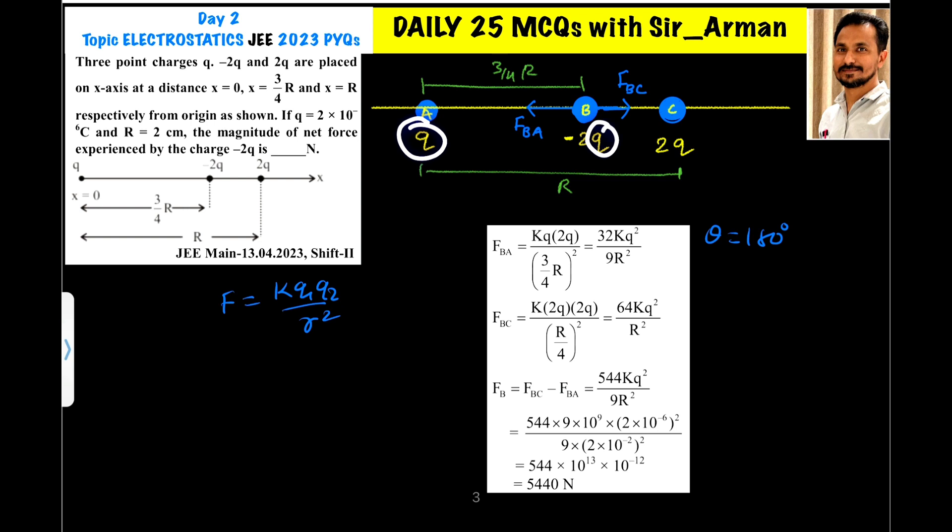The value of q in each term is 2 × 10^-6 coulomb, that is 2 microcoulomb, and the value of r for each term is 2 centimeter. The magnitude of net force experienced by the charge -2q, what is the net force experienced by this charge we have to find. Now see, the charge at A and the charge at C are positive, whereas the charge at B which is -2q is negative.